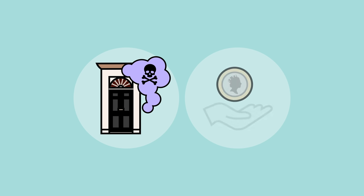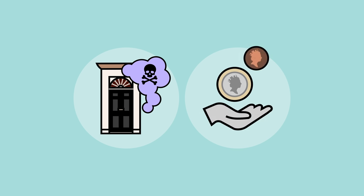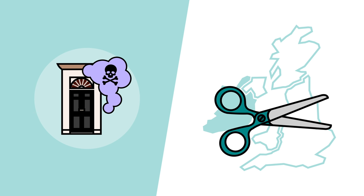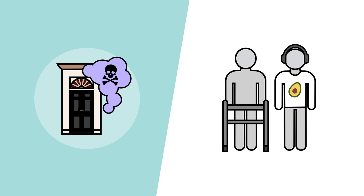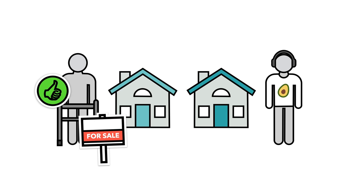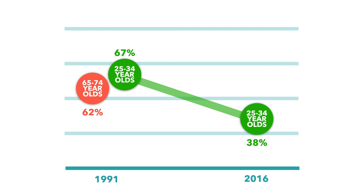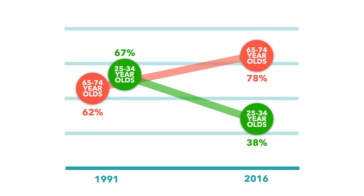House price appreciation is different for two reasons: it's politically toxic and it exacerbates inequality. It's politically toxic because the housing divide cuts across demographic lines — the housing crisis essentially benefits older homeowners at the expense of younger renters. In 1991, 25-to-34-year-olds and 65-to-74-year-olds were about equally likely to own their own homes. As of 2016, only 38% of 25-to-34-year-olds own their home compared to 78% of 65-to-74-year-olds.